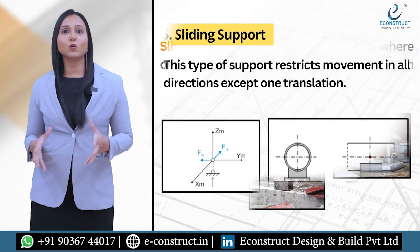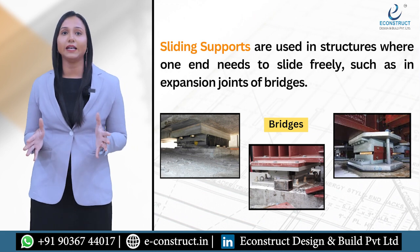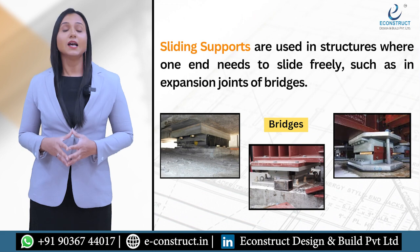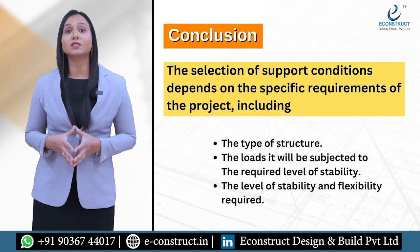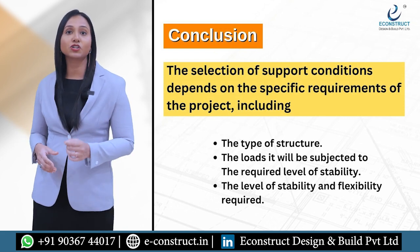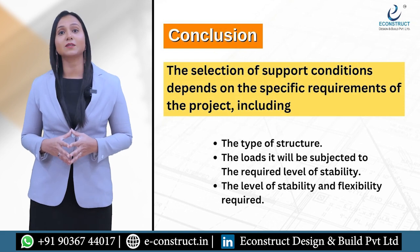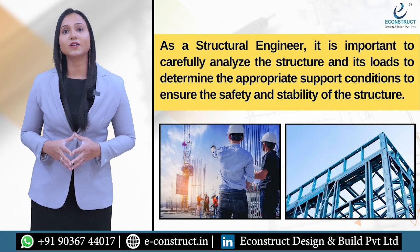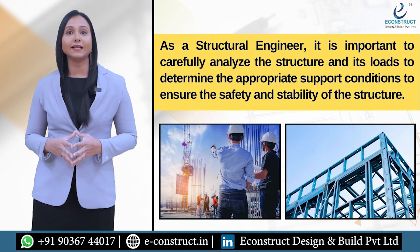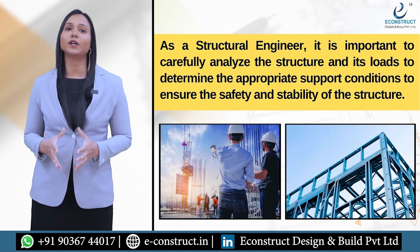The next one is sliding support. This type of support restricts movement in all directions except one translation. Sliding supports are used in structures where one end needs to slide freely, such as in expansion joints of bridges. The selection of support conditions depends on the specific requirements of the project, including the type of structure, the load it will be subjected to, and the level of stability and flexibility required.